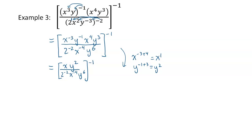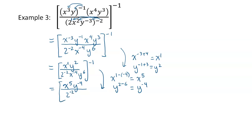Now applying the quotient rule: X to the power of one, subtract negative four — that gives X to the power of one plus four, which is five. And Y to the power of two, subtract six, gives Y to the power of negative four. So applying the quotient rule gives X to the power of five, Y to the power of negative four, all over two to the power of negative two. Now applying that negative one outside the brackets with the power of a power rule to all three exponents inside, we get X to the power of negative five, Y to the power of positive four, and two to the power of positive two. Aren't you glad we didn't flip things along the way.